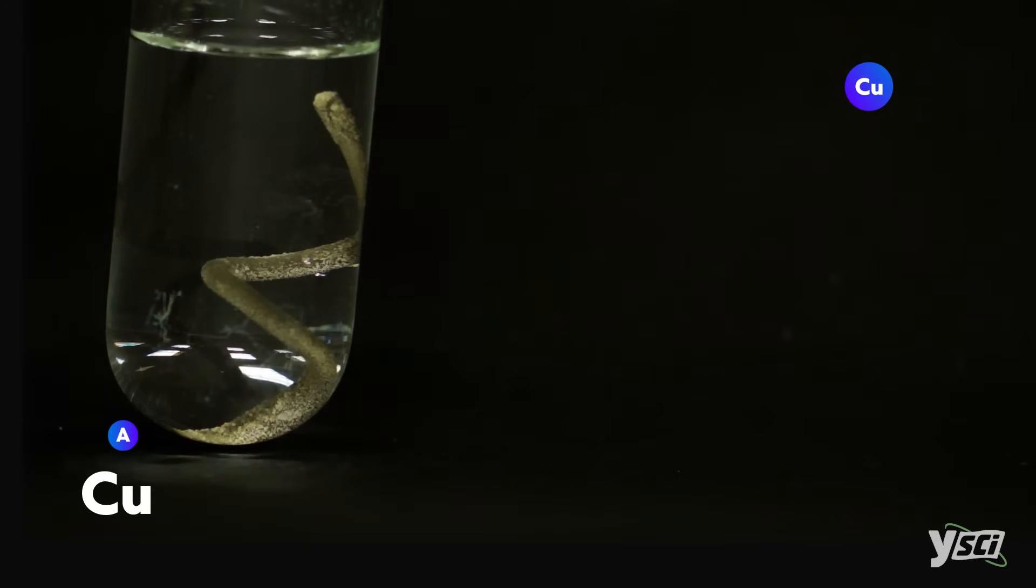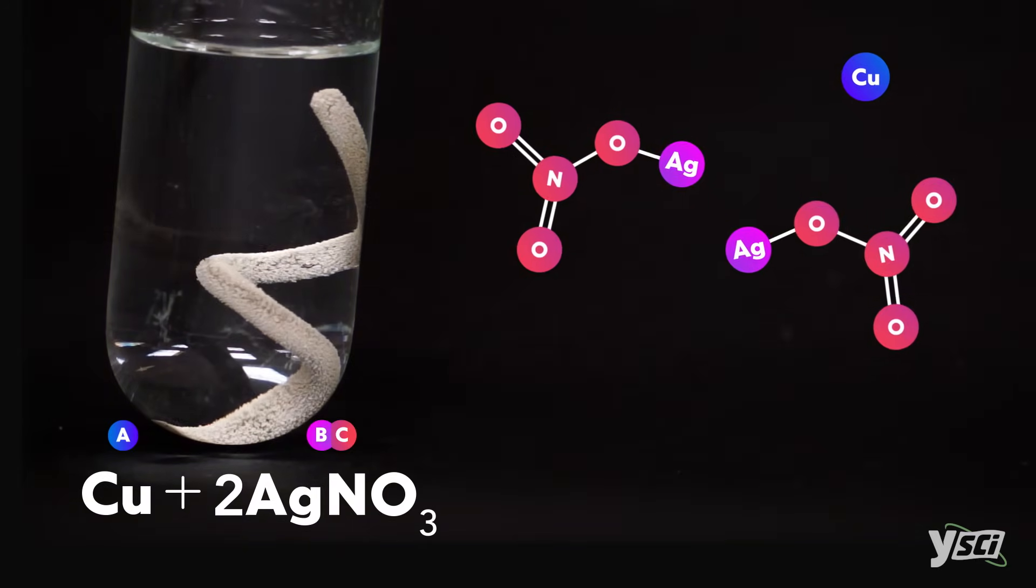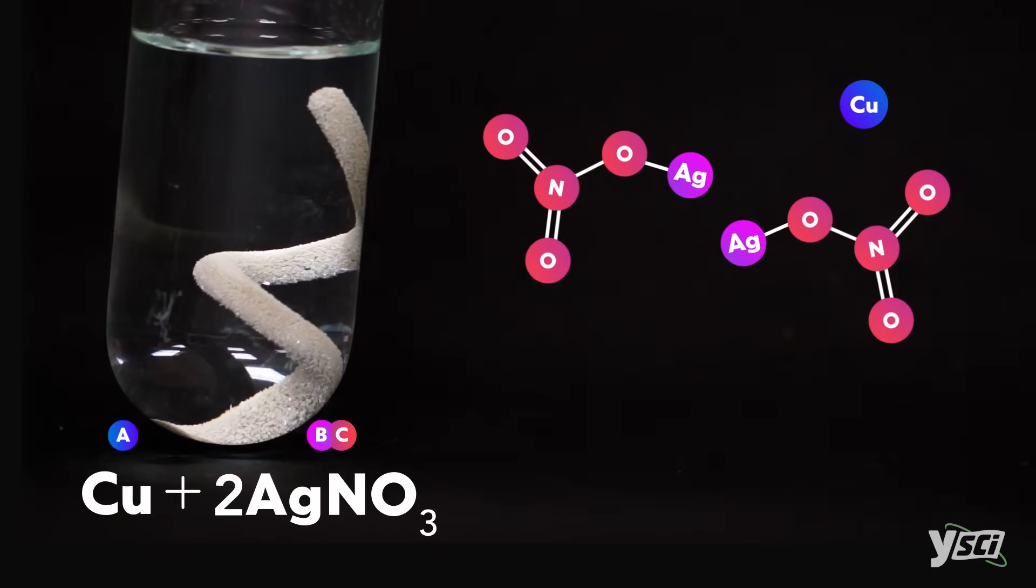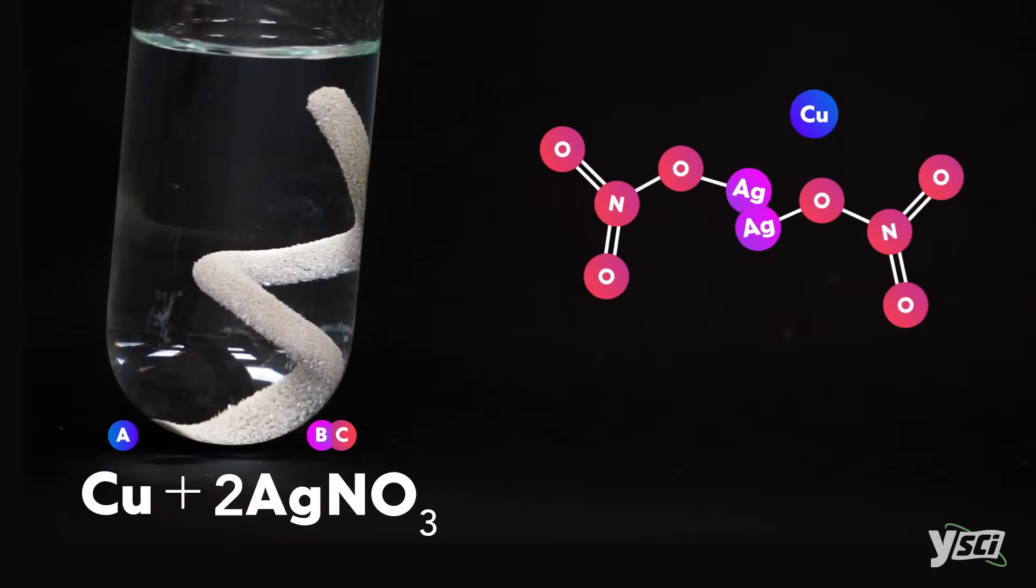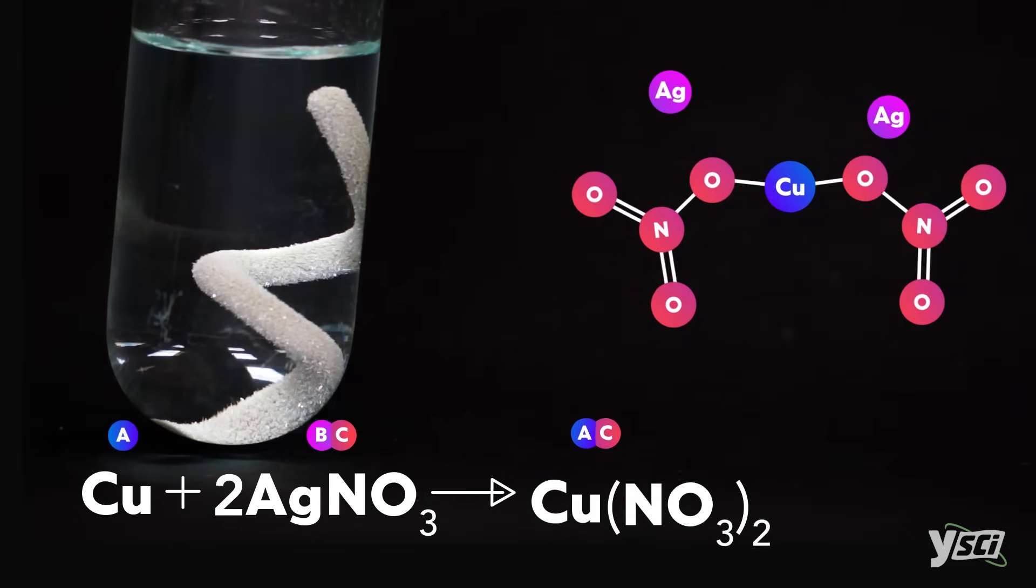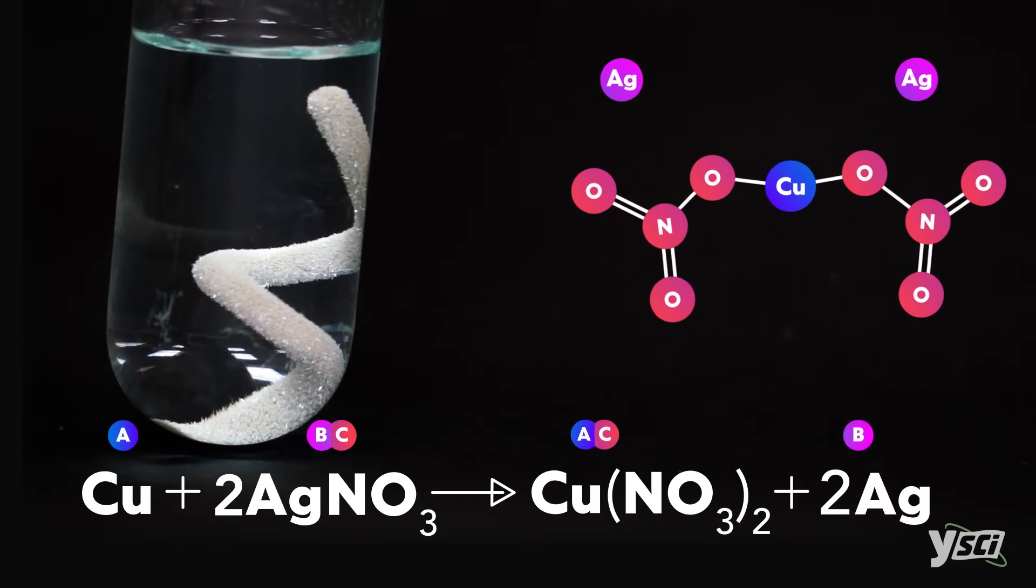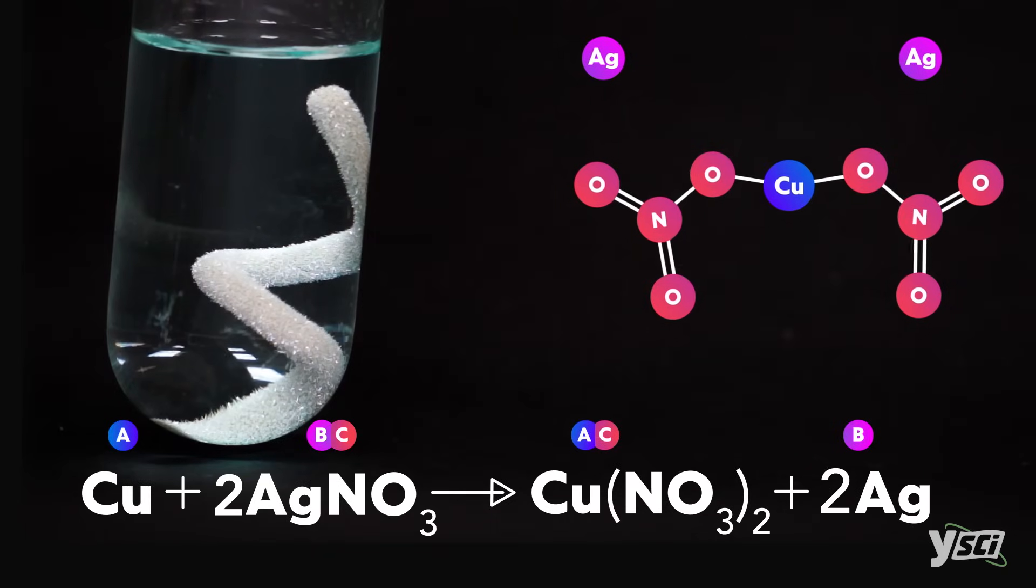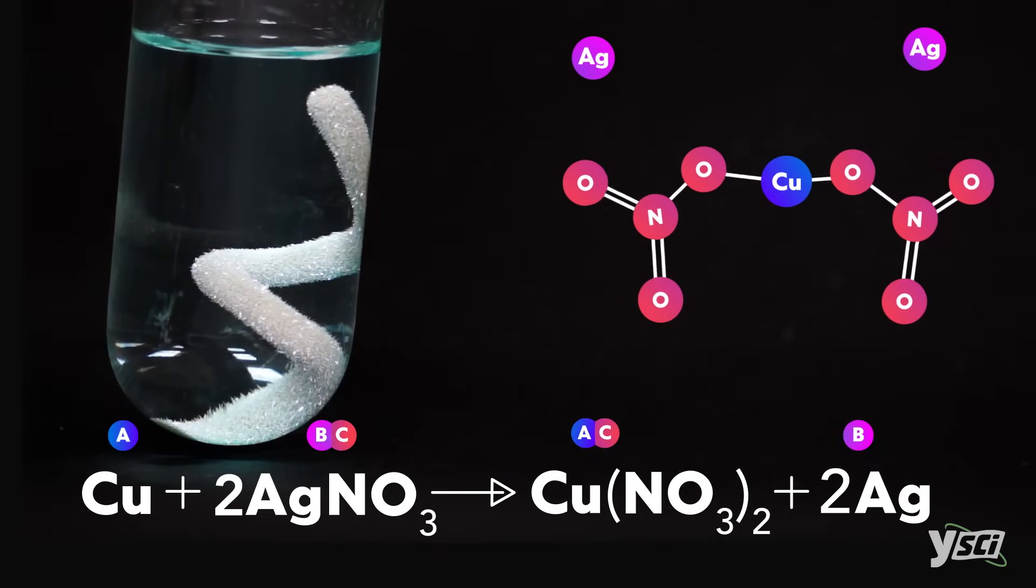Here we placed a copper wire in a silver nitrate solution. Copper is more reactive than silver, so it replaces the silver in the silver nitrate. Our products are copper to nitrate and silver crystals. You can see the silver crystals beginning to accumulate on the wire and the solution turned blue from the dissolved copper.